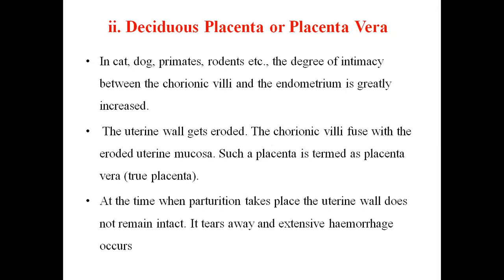The second type is deciduate placenta, found in cat, dog, primates, rodents, etc. Here the degree of intimacy between chorionic villi and endometrium is greatly increased. The chorionic villi deeply erode into the uterine wall, penetrating through the uterine mucosa. Such a placenta is termed true placenta. At the time of parturition, the uterine wall does not remain intact — as villi come out, they damage and tear the uterine wall, causing heavy bleeding.